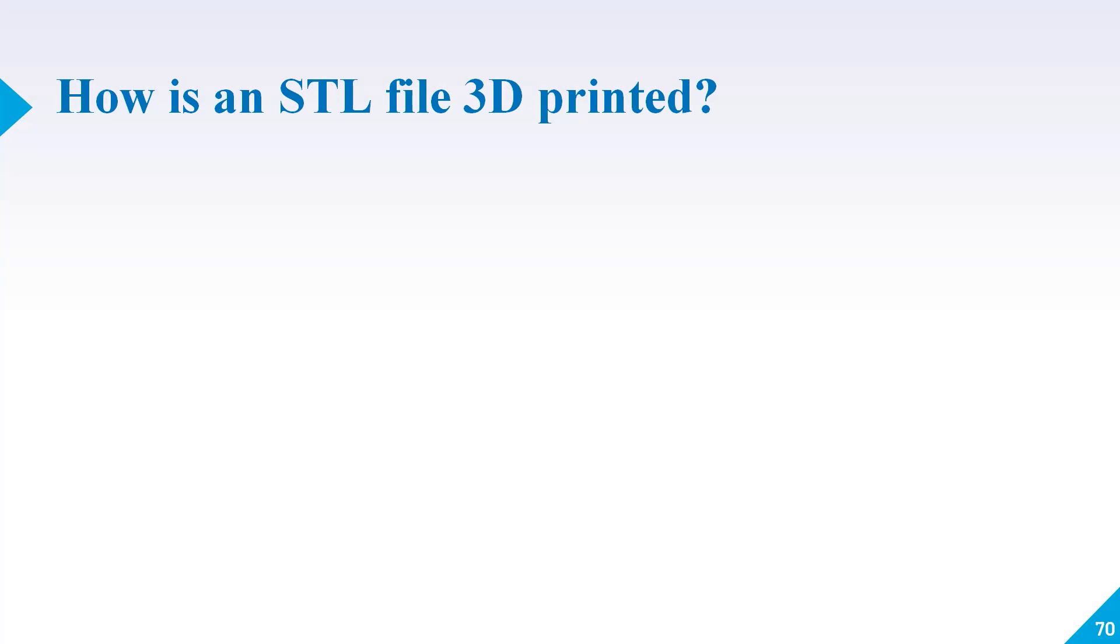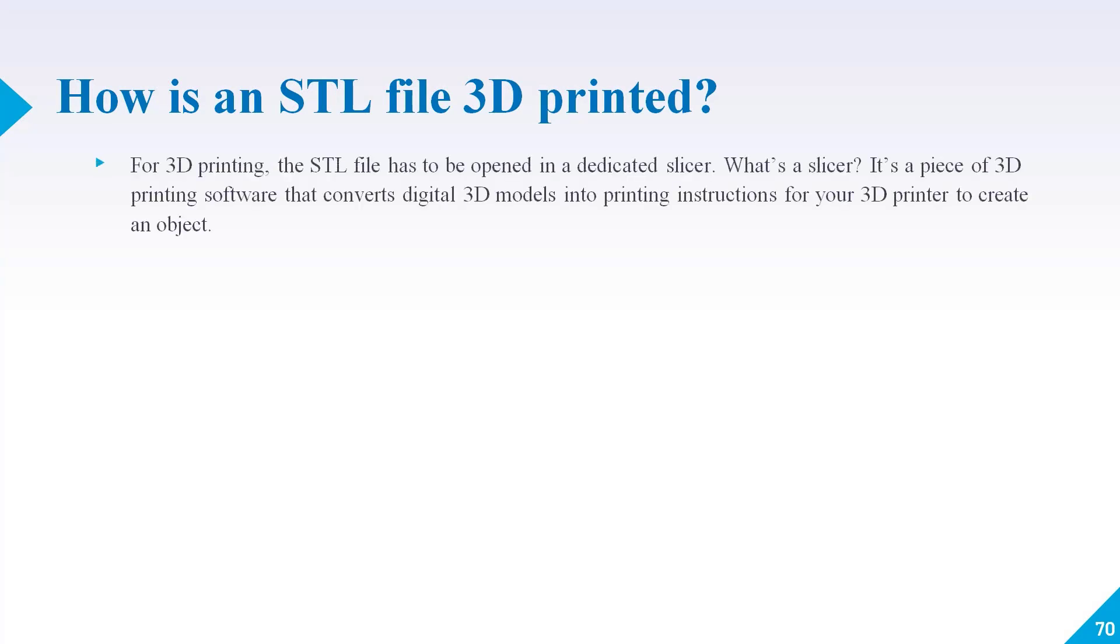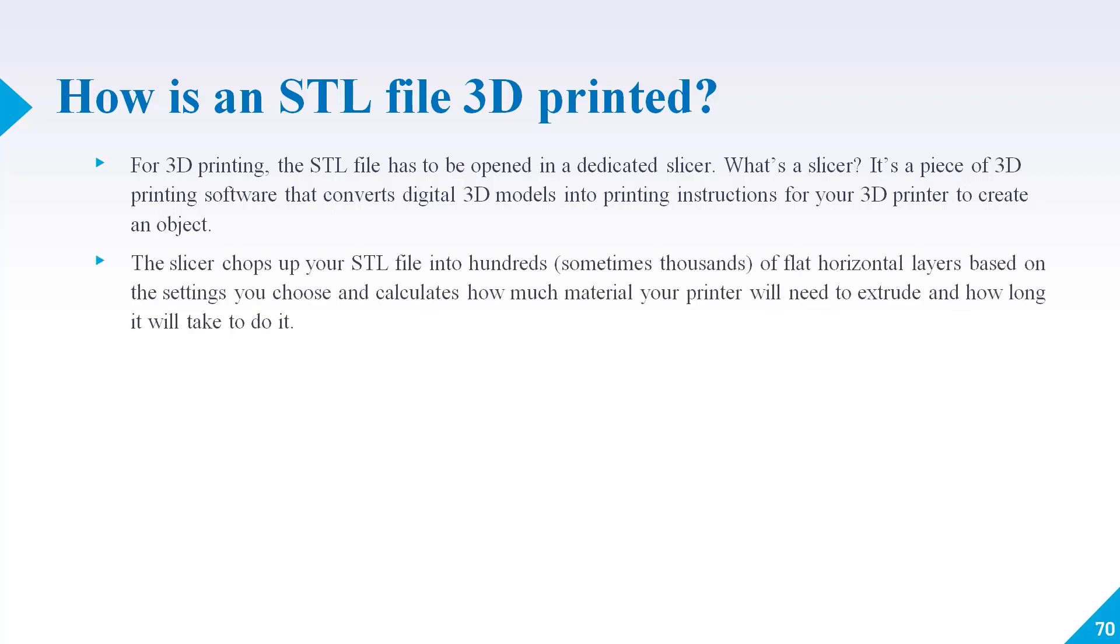How is an STL file 3D printed? For 3D printing, the STL file has to be opened in a dedicated slicer. What is a slicer? A slicer is a piece of 3D printing software that converts digital 3D models into printing instructions for your 3D printer to create an object. The slicer chops up your STL file into hundreds, sometimes thousands, of flat horizontal layers based on the settings you choose and calculates how much material your printer will need to execute and how long it will take to do it.